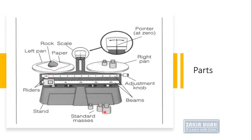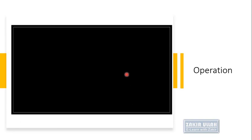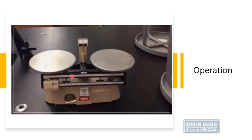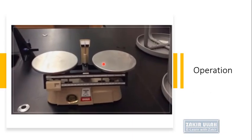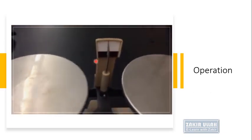The riders give the tens or hundreds and units of the reading. There is also the stand, the known masses, and the adjustment knob. Before weighing, we adjust the pan to zero if there is any error. The balance is first brought to zero and then used for weighing objects. The fulcrum is present between the two pans and is usually at zero when not in use.